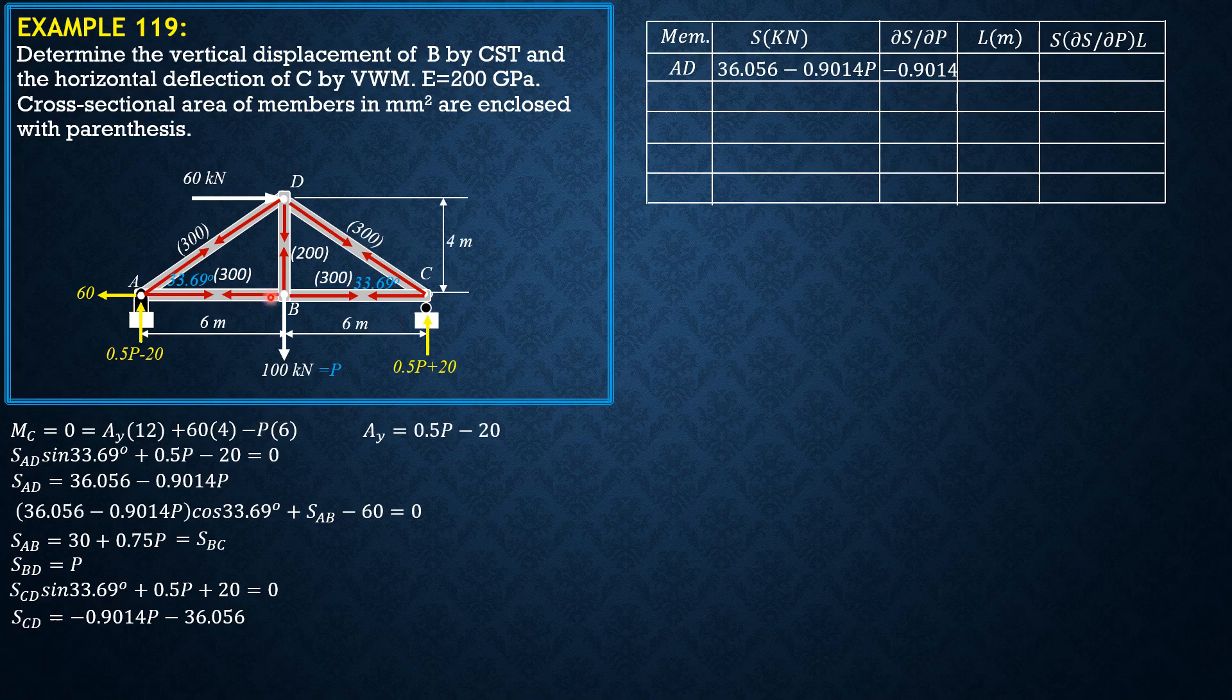Its length is square root of 6 squared plus 4 squared, that's 2 square root of 13 meters. Then the product of S, take note P has a value of 100, so 36.056 minus 0.9014 of 100 times negative 0.9014 times 2 square root of 13, that would be negative 3351.55.